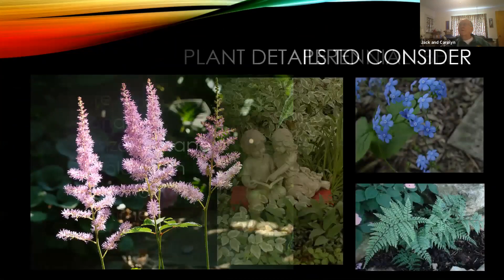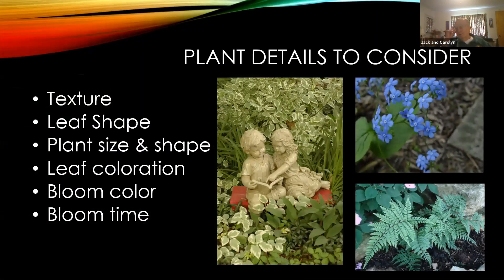When thinking about perennials for garden design, I want you to think about the features of perennial plants to keep in mind. Consider texture, leaf shape, plant size and shape, leaf coloration, bloom color, and bloom time. Some of those features may be important in a particular area and some may not, but you want to take them all into account. Very often it's useful to mix different kinds of plants with different features, even though their colors may be somewhat similar.